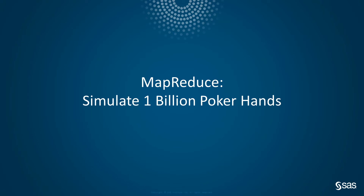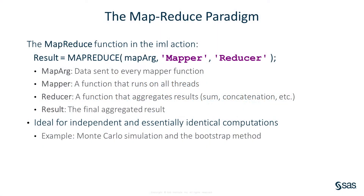Let's see how to run a massive simulation in parallel. We will simulate one billion five-card hands and use the empirical counts to estimate the probabilities of each poker hand. The map reduce function takes three input arguments: the data, which are sent to the mapper function on each thread; the mapper function, which runs on each thread; and the reducer function, which aggregates the results from the mapper functions. The map reduce function returns the aggregated result, and is ideal for independent and essentially identical computations such as Monte Carlo simulation and resampling methods.